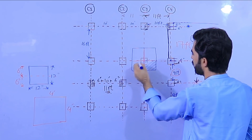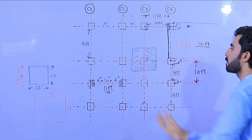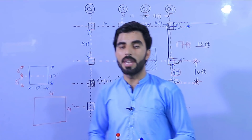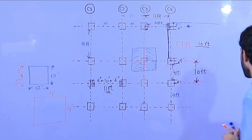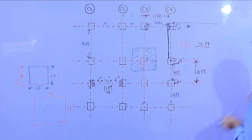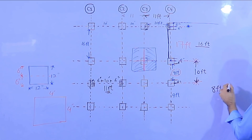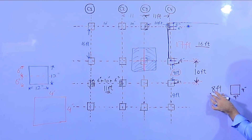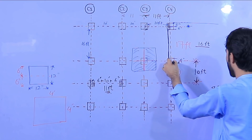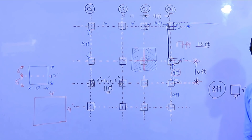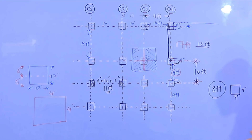If you have a 9-inch column thickness and the clear distance is, for example, 8 feet, then from this center to this center — if you require 8 feet clear distance — you will keep 8 feet plus 9 inches, which equals 8 feet 9 inches.